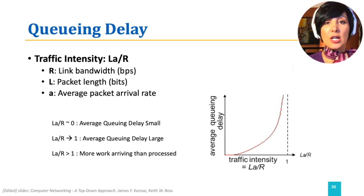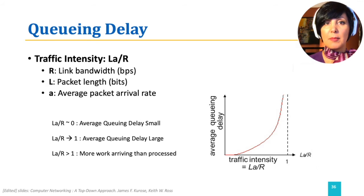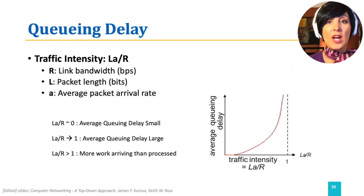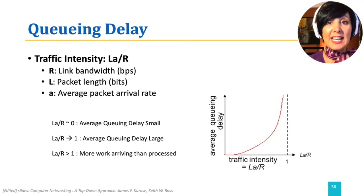If LA over R is almost zero, it means the queuing delay will be very small. As LA over R increases towards 1, the link is being used near capacity; therefore, with newer packets arriving, we will have longer and longer queuing. If LA over R is larger than 1, it means there is more work than can be processed, which will result in long queuing delays and possible packet loss.